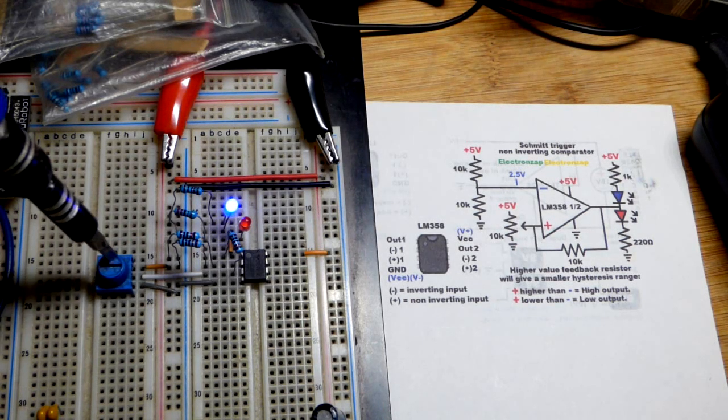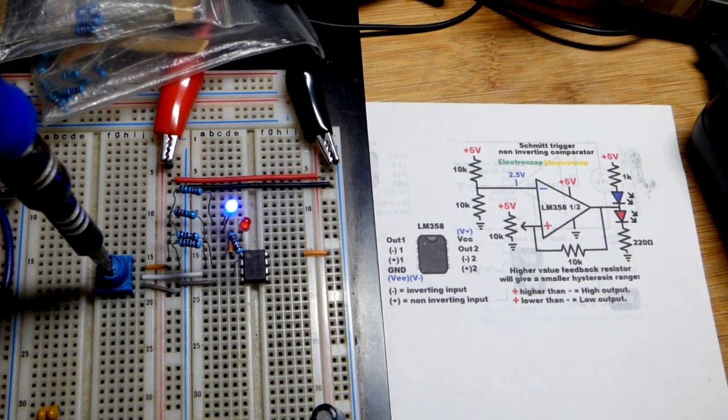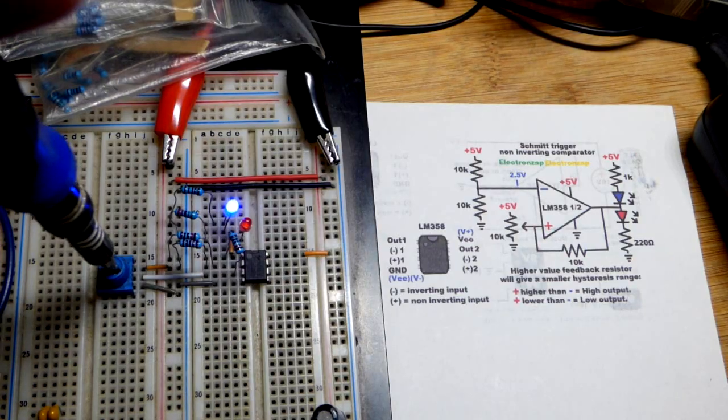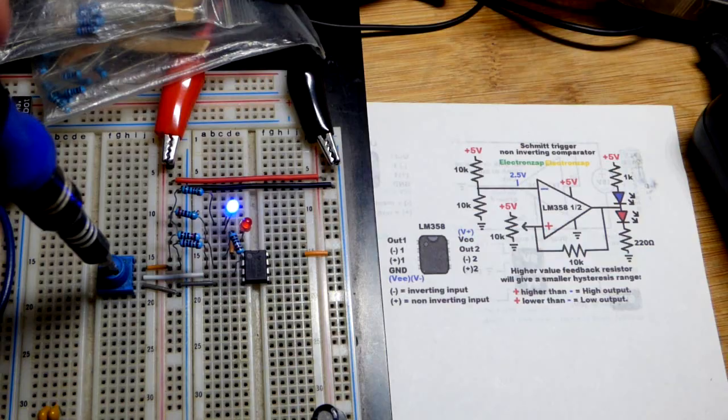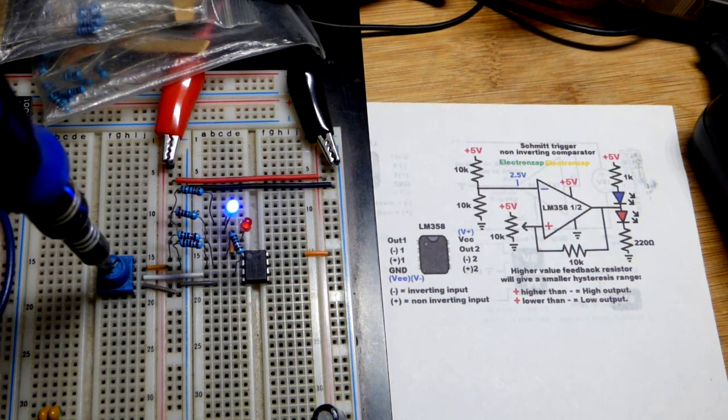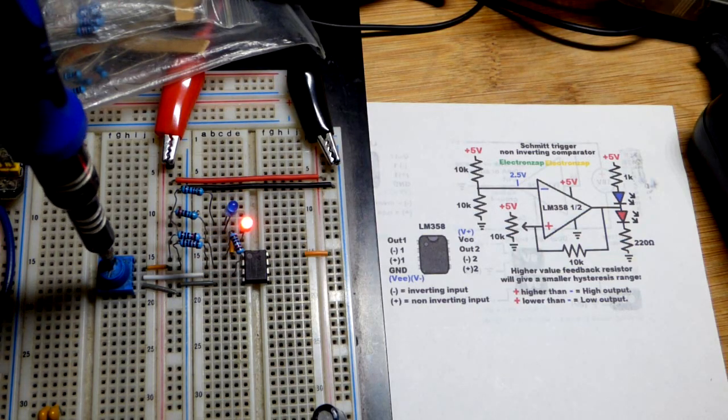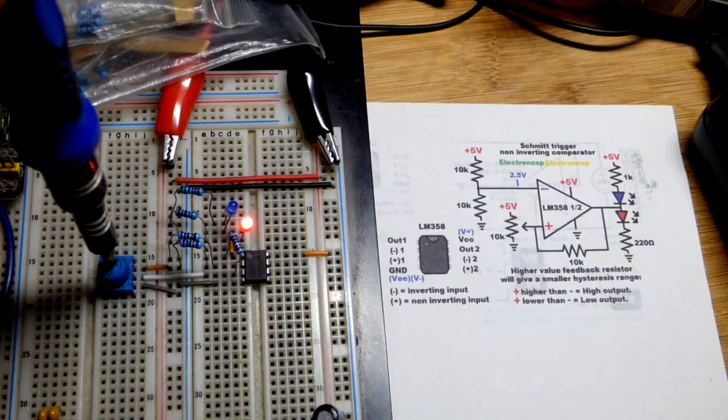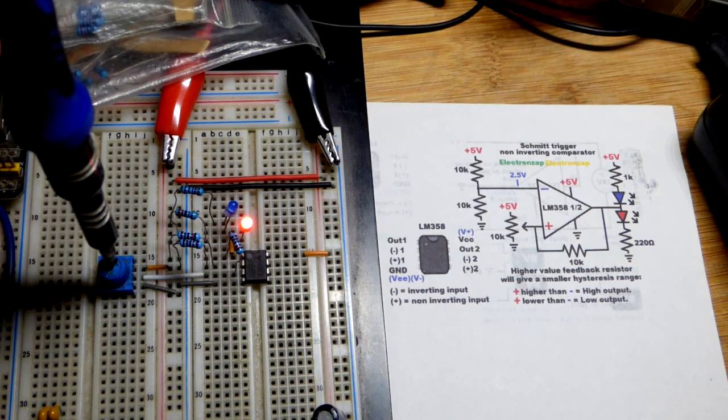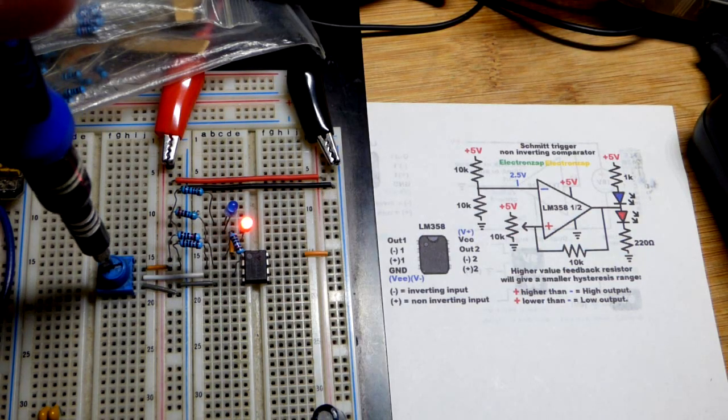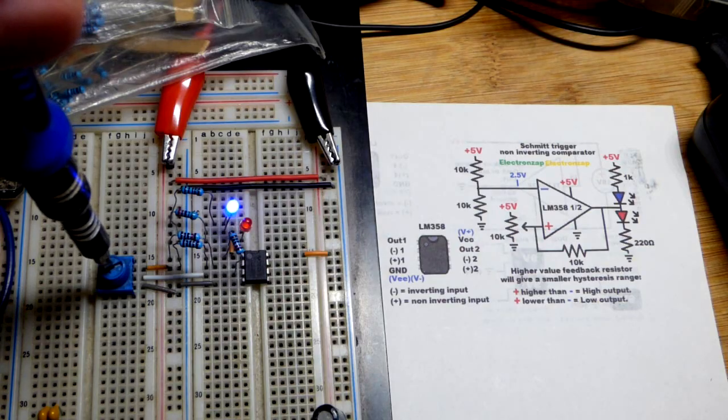Now in this video we have a Schmidt trigger non-inverting comparator. We have a lower input voltage to the plus pin. If I raise the voltage above halfway, approximately halfway, we have a high output. Now I mentioned approximately halfway because I actually have to go down a little bit more to get the output low.